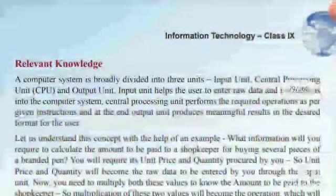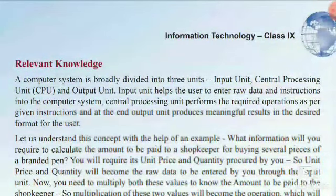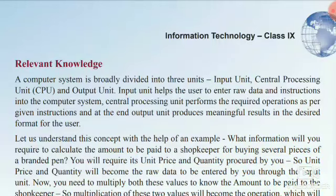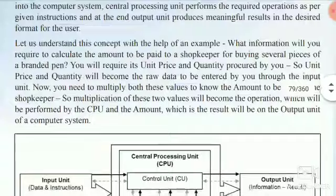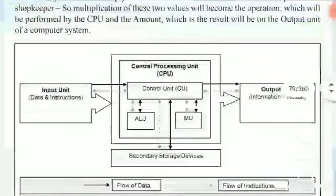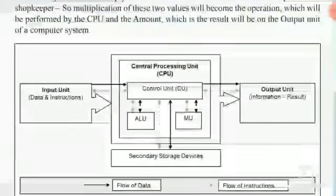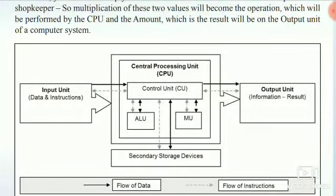A computer system is broadly divided into three units: the input unit, the central processing unit (CPU), and the output unit. The input unit helps the user to enter raw data and instructions into the computer system. The central processing unit performs the required operations as per the given instructions, and the output unit produces meaningful results in the desired format for the user.